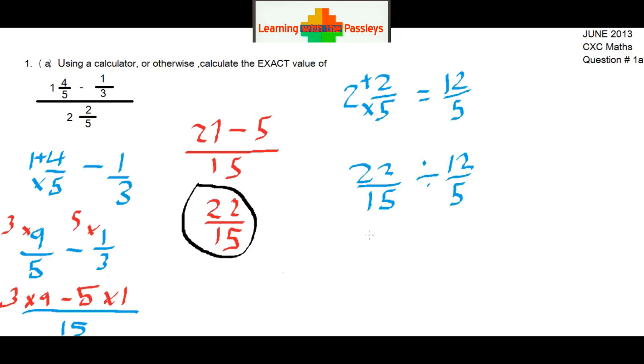We're going to keep the first fraction. Then we're going to change the division sign to multiplication. Then we're going to flip the second fraction, so we have 5 at the top and 12 at the bottom.